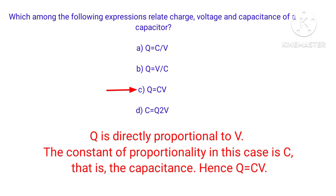Which expression relates charge, voltage, and capacitance of a capacitor? The correct expression is Q = C × V, where charge Q is directly proportional to voltage V.